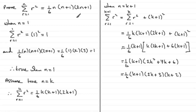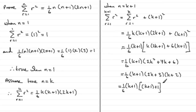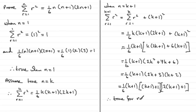Now we rewrite this in the expected format: one sixth times k plus 1. The factor k plus 2 can be written as k plus 1 plus 1, which matches the n plus 1 bracket. The factor 2k plus 3 can be seen as 2 times k plus 1 plus 1, matching the 2n plus 1 bracket. So we can see it is therefore true for n equals k plus 1.